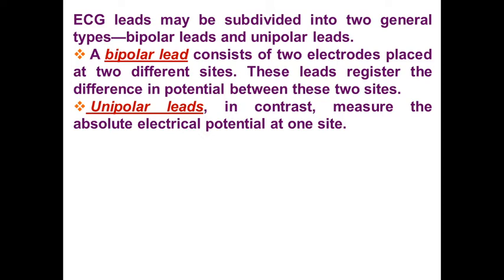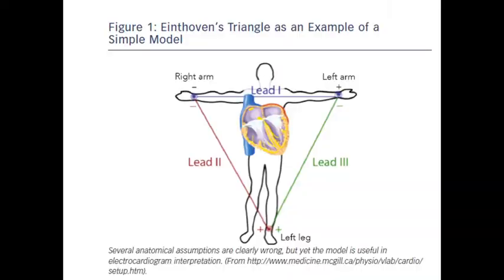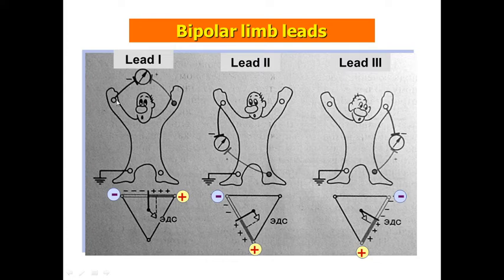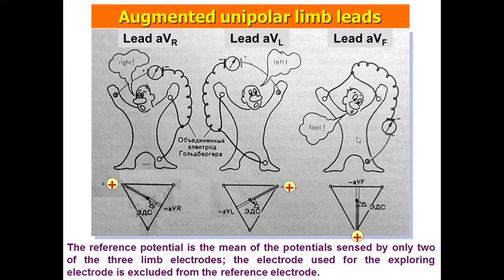Unipolar leads, in contrast, measure the absolute electrical potential at one site. The standard leads 1st to 3rd are bipolar leads because they record the differences of potential from two electrodes. For example, the 1st lead registers the difference between the arms, the 2nd lead between the right arm and left leg, and the 3rd lead between the left arm and left leg. We also recognize unipolar leads from the right hand, left hand, and left foot.